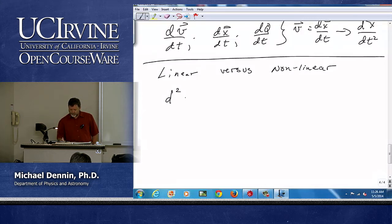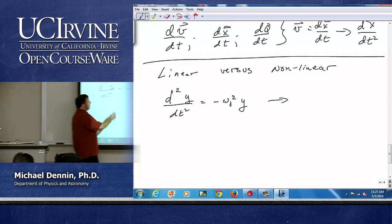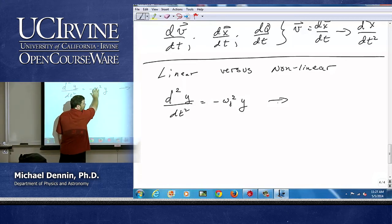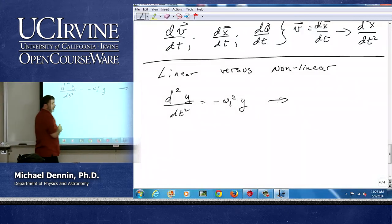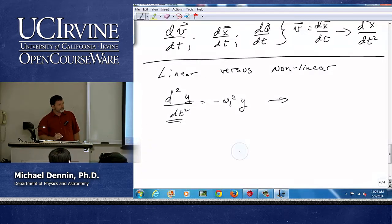d²y/dt² equals -ω₀² y. Linear or nonlinear? Linear. This is just a parameter, even though I have a squared here. The variable is linear. It never appears as a higher power than one, even though what order is this? Second. So second order, linear. This is a linear equation.